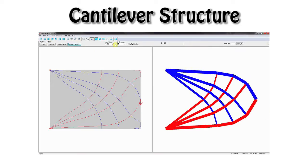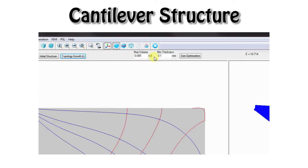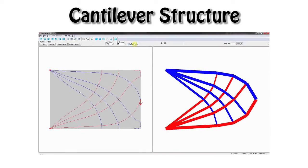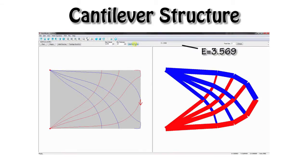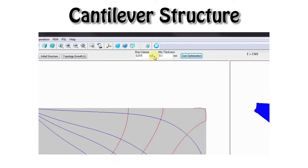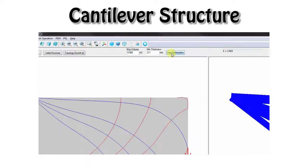We can also change the allowable maximum volume to get a different material distribution. For example, we change from 0.005 to 0.015 here. Or inversely, we can get it smaller to 0.002.